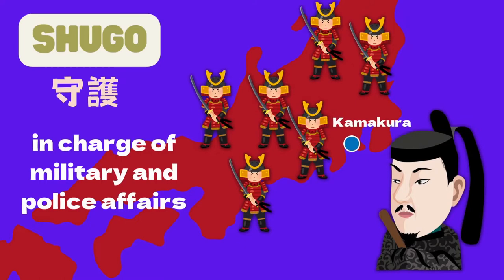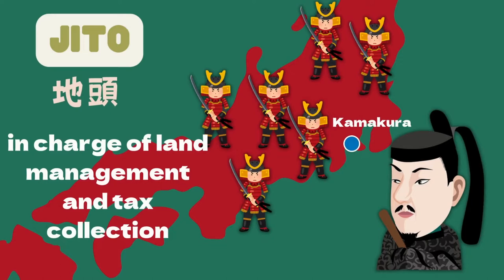Shugo was a position that Yoritomo placed in each province. They were in charge of military and police affairs. Jito was a position that Yoritomo assigned to a manor or fief. They were in charge of land management and tax collection.